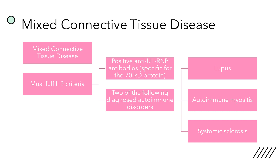In order to qualify for mixed connective tissue disease, there are two criteria you must fulfill. One is a positive anti-U1 RNP antibody — specifically the 70 kD protein — and you must have two of the following diagnosed autoimmune disorders: lupus, autoimmune myositis, or systemic sclerosis. So two of those autoimmune disorders plus the positive anti-U1 RNP.